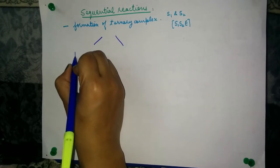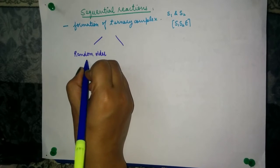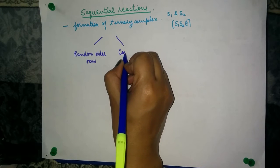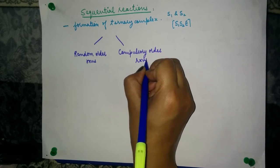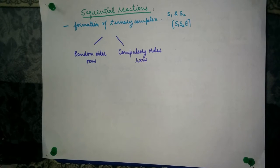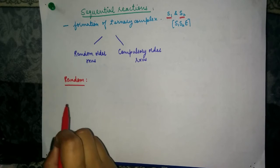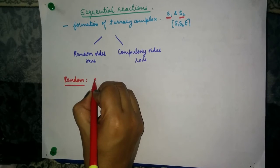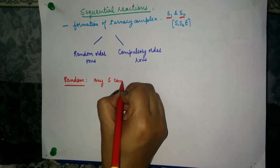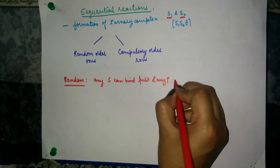Sequential reactions can be of two types: random order sequential reactions and compulsory order sequential reactions. In random order, as the name suggests, any substrate can bind first to the enzyme and any product can leave first.